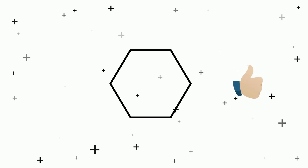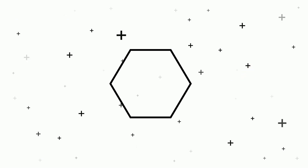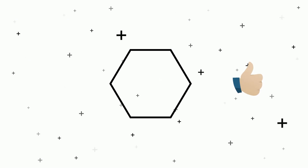A hexagon — yes! Because it has sides, vertices, and angles, it's a 2D shape, and it's a closed shape.